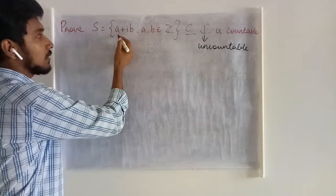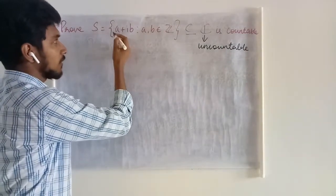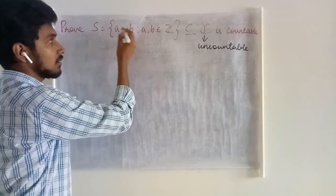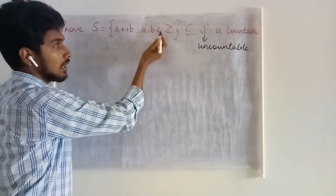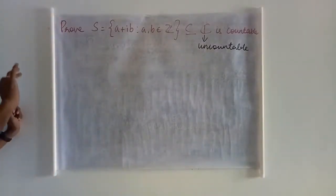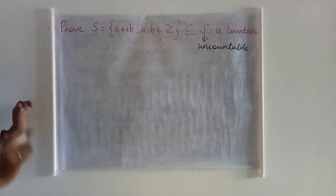In the given set, it is consisting of the complex numbers where the entries, these A and B, these entries are integers. How are we going to achieve it?